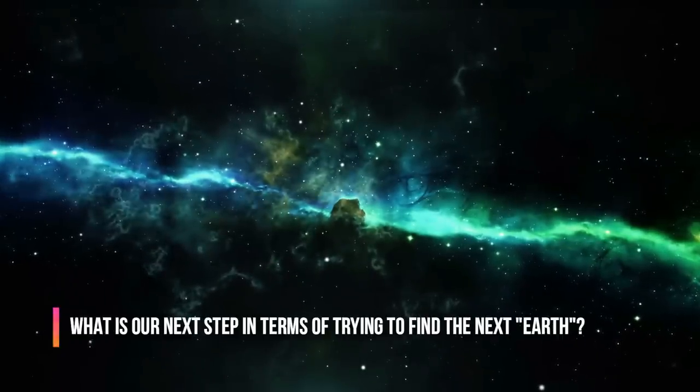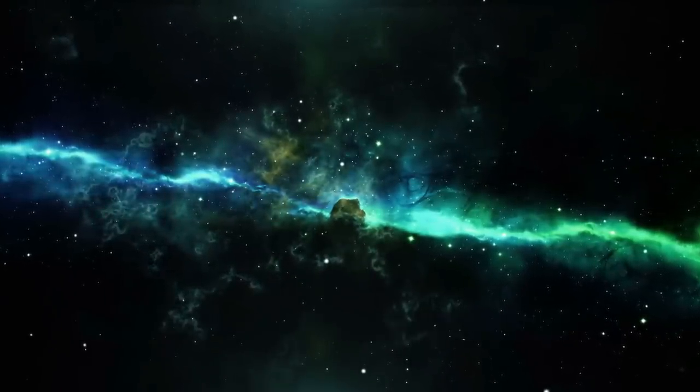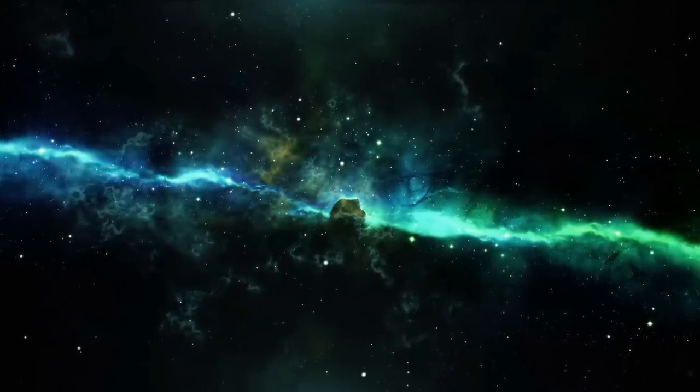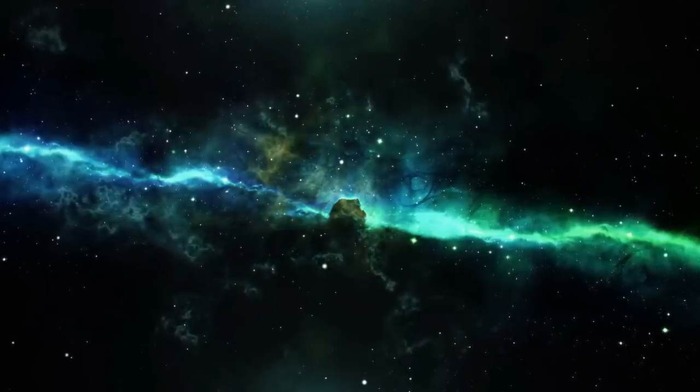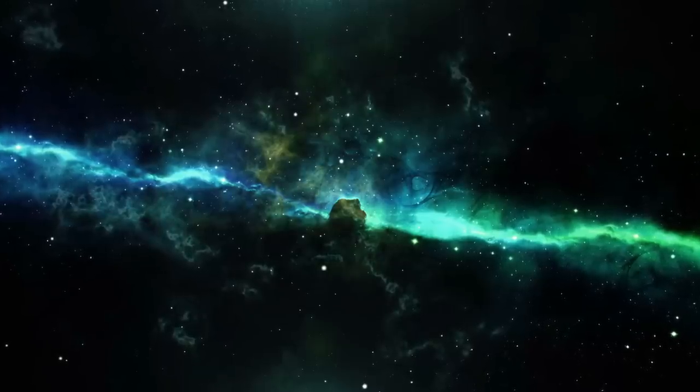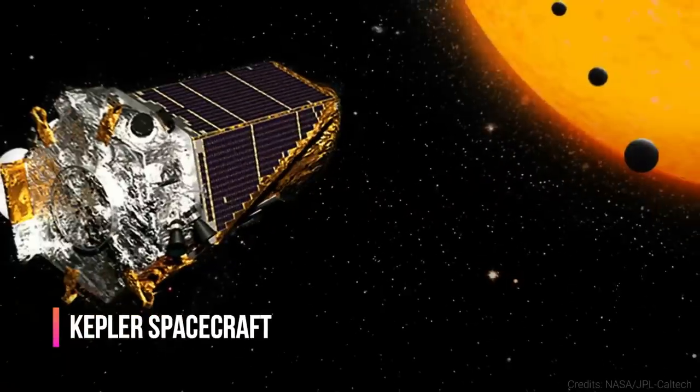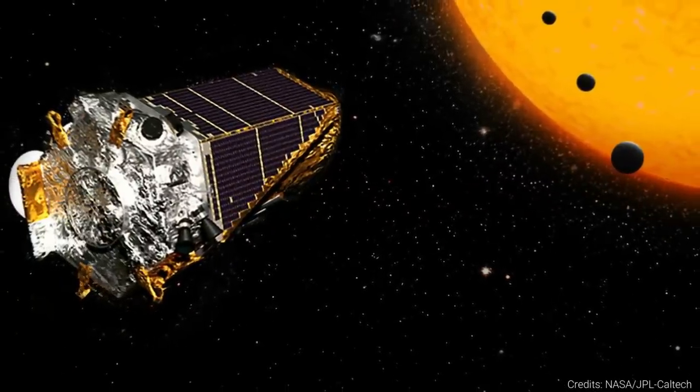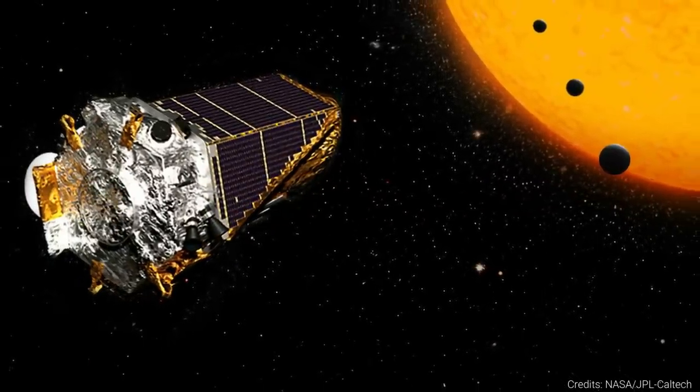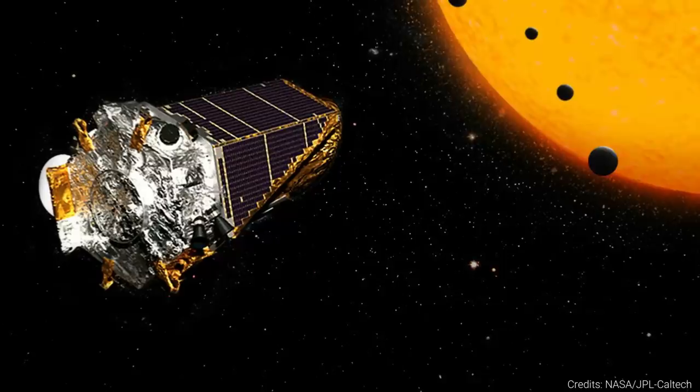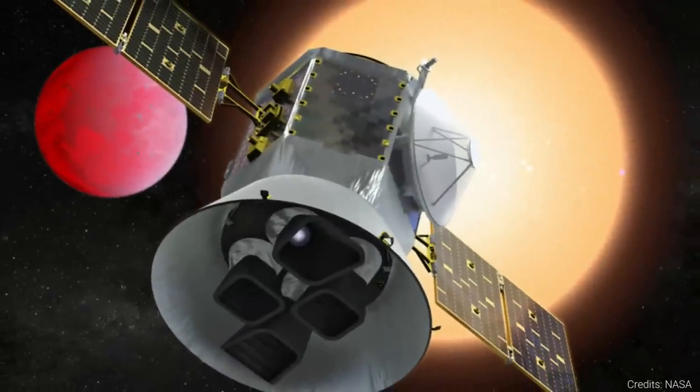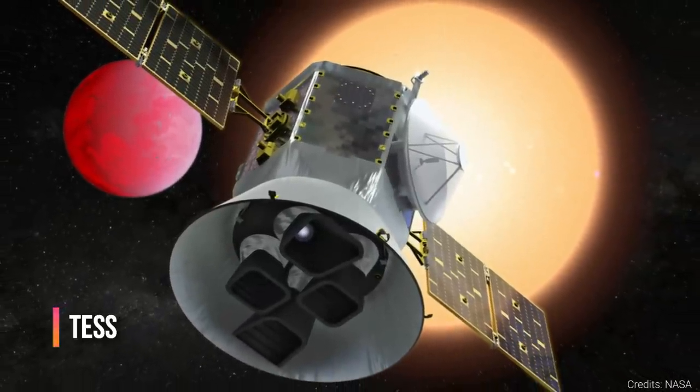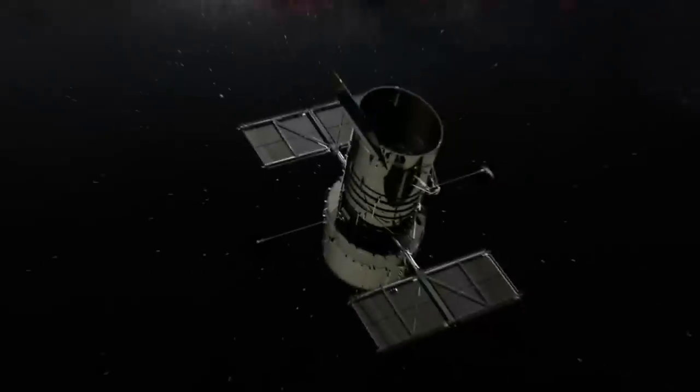So what is our next step in terms of trying to find the next Earth? Simple, we keep looking. I'm sure that sounds a bit basic, but as we outlined earlier, Kepler-1649c is just one planet amongst thousands that have been found by the Kepler spacecraft during its decade-long mission. And with many false positives still being out there potentially, there are even more worlds to be rediscovered and dissected. Plus, we have new crafts like TESS that can further go and discover new worlds. And that's saying something.